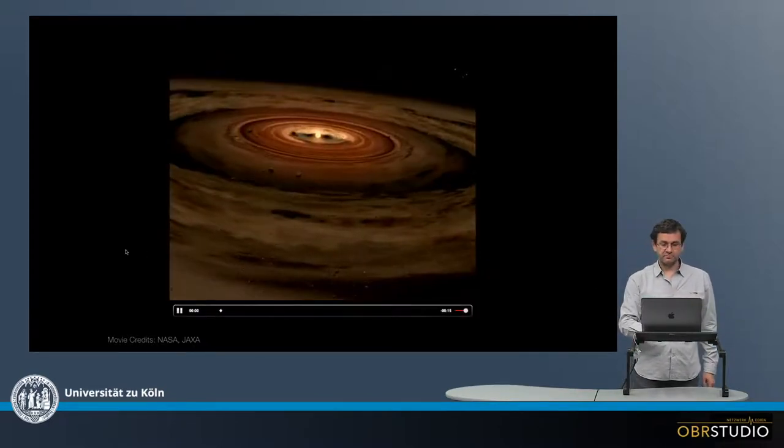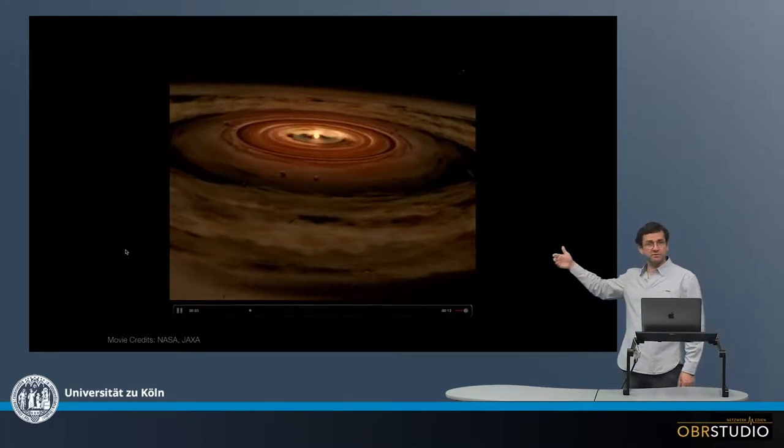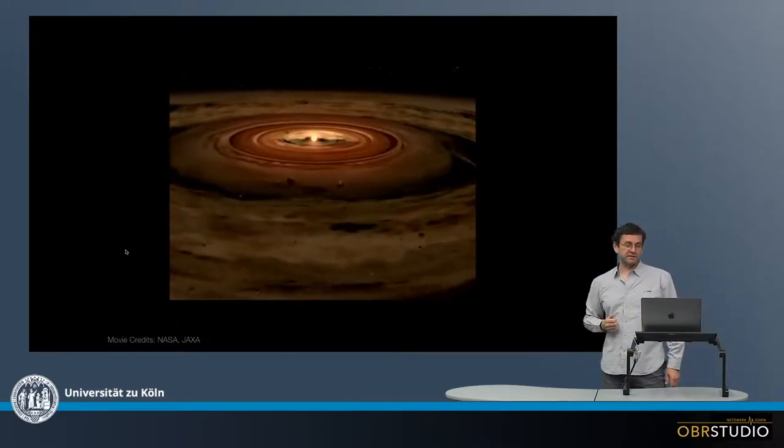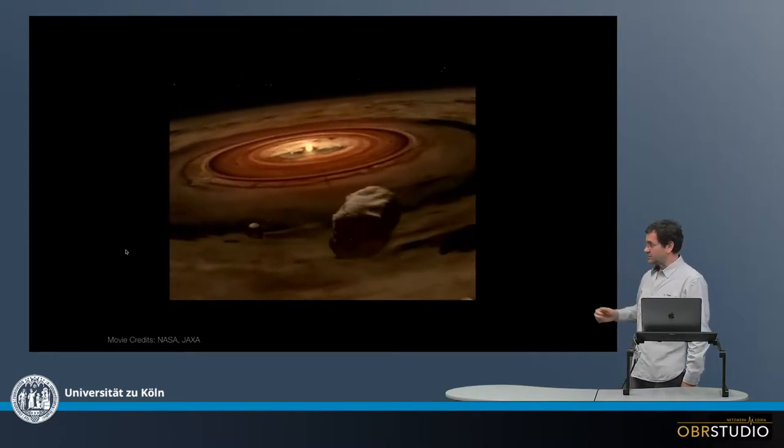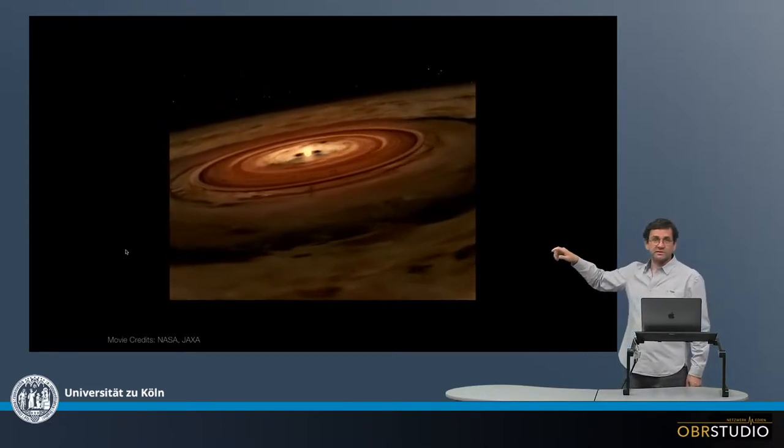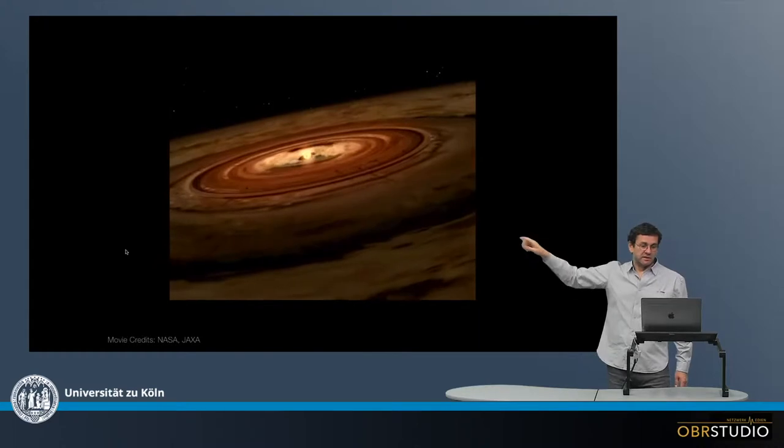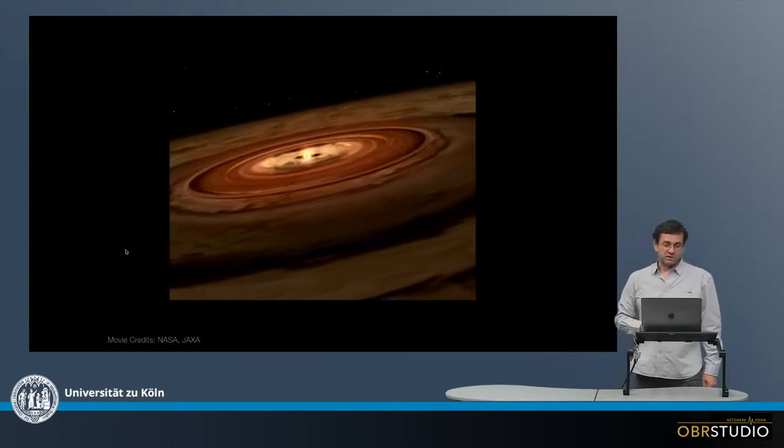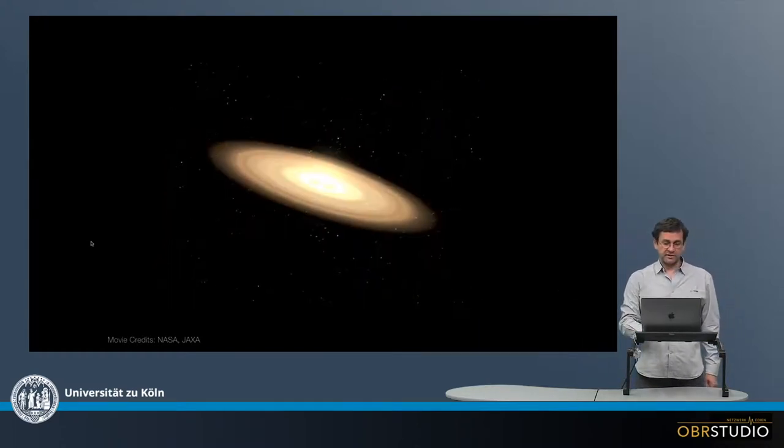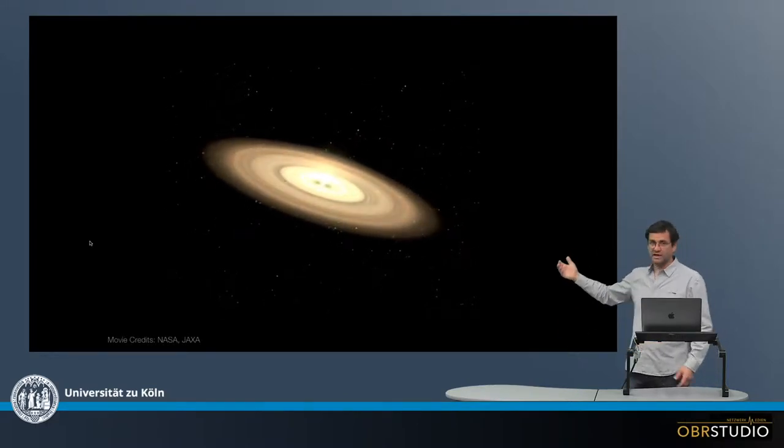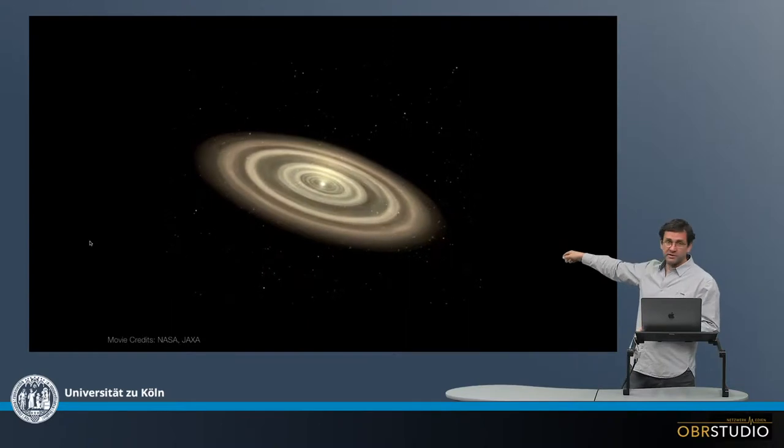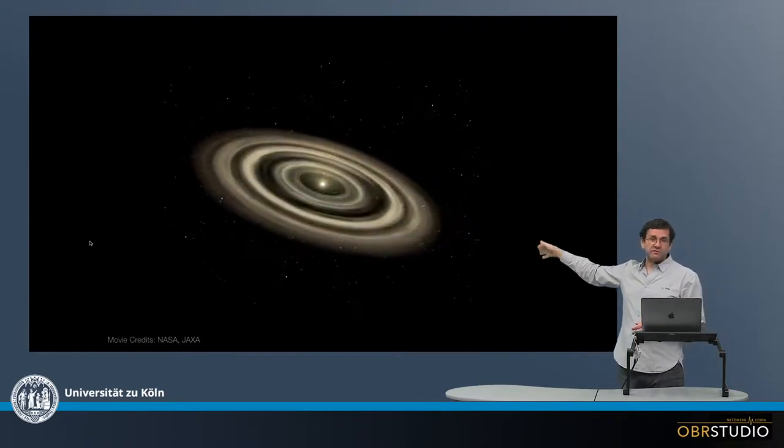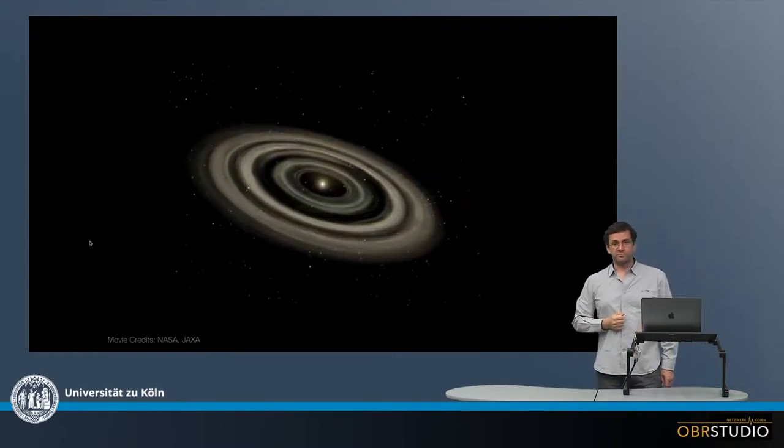This is how an artist envisions the protoplanetary disk early on. It's quite good to get a first idea. The sun is in the center, and then the swirling protoplanetary disk around this center. In the center, over time, material accretes together, gaps are opening, in which the various planets form.